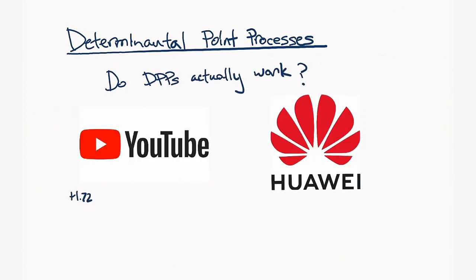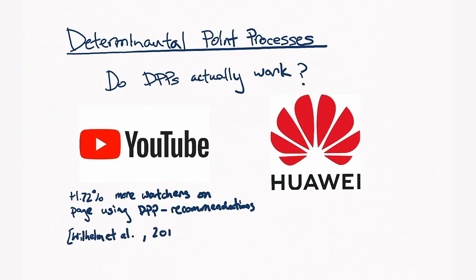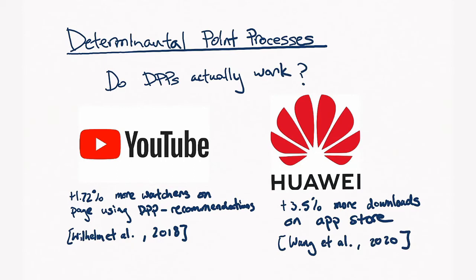So, do DPPs actually work? Well, I wouldn't be giving this talk if they didn't. And in two recent papers by YouTube and Huawei, significant gains in practice were shown. In particular, for YouTube, 1.72% more watchers were found to be on pages using DPP-based recommendations. And for Huawei, by switching to a DPP-based algorithm, they were able to get 3.5% more downloads per user on their app store.